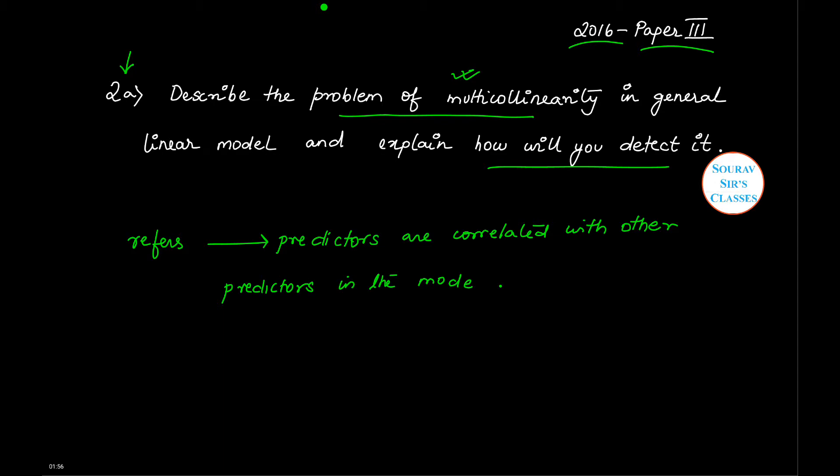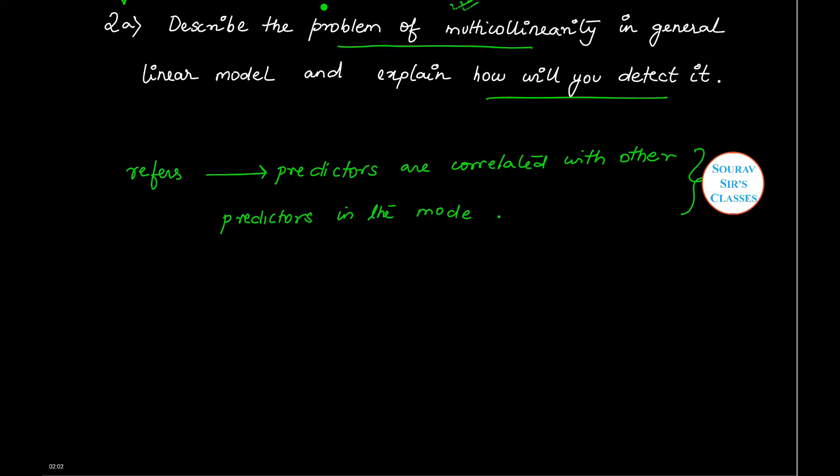Now whether it is a problem or not, let us see. If there is moderate multicollinearity, then this may not be problematic. However, if the multicollinearity is severe, then there is a problem because it can increase the variance of the coefficient estimates.